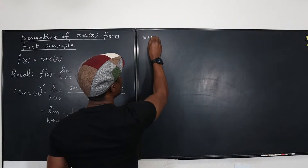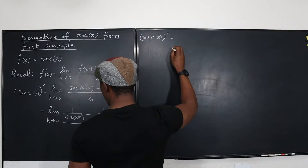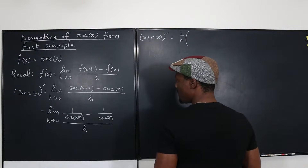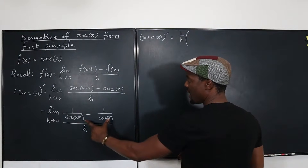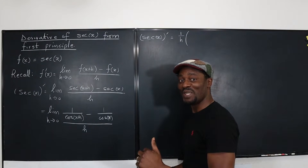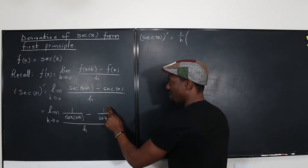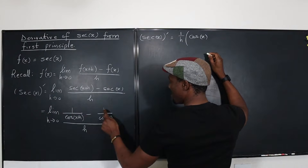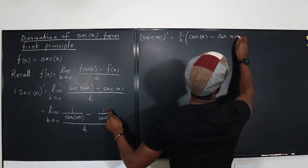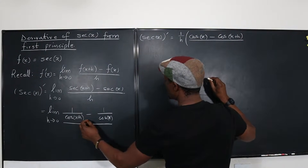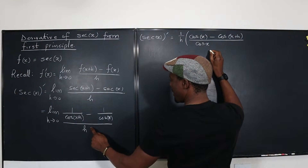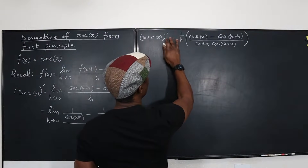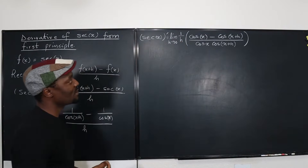So the derivative of secant x equals — instead of writing h under everything, I'll write one over h out front. Then I combine the two fractions. Using the cross-multiply method: the numerator becomes cosine(x) minus cosine(x+h), and the denominator is cosine(x) times cosine(x+h). Don't forget the limit as h goes to zero — I can't afford to forget that.